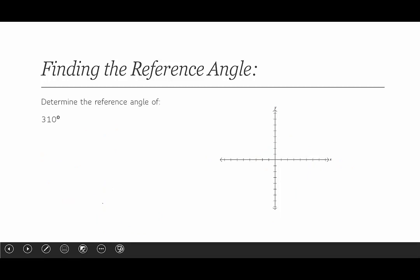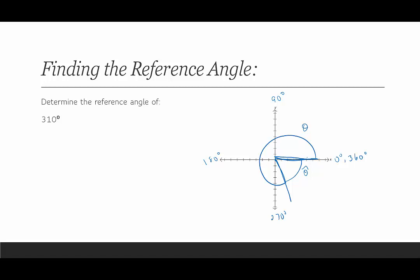Another example: 310 degrees. Labeling: 0°, 90°, 180°, 270°, 360°. 310 degrees terminates in quadrant 4, closer to 270. Drawing theta, the reference angle theta hat is along the positive x-axis down to that terminal side — always the x-axis, never the y-axis. To find the reference angle: 360 degrees minus 310 degrees equals 50 degrees. So theta hat for 310 degrees is 50 degrees.